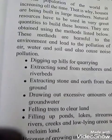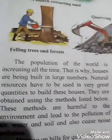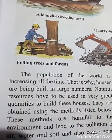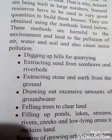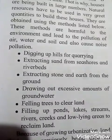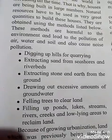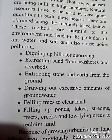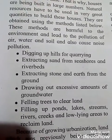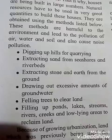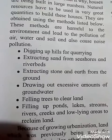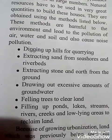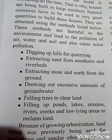The fifth point is felling trees to clear land — the man is cutting trees, causing deforestation as forests are cleared. The last method is filling up ponds, lakes, streams, rivers, creeks, and low-lying areas to reclaim land.